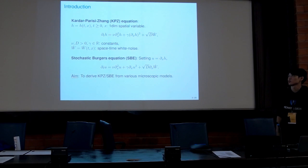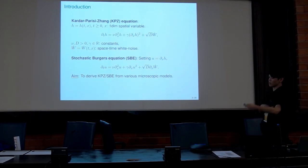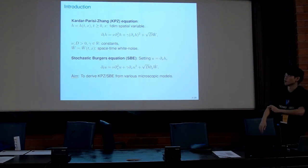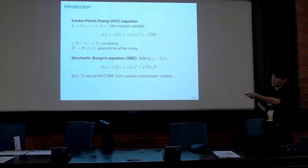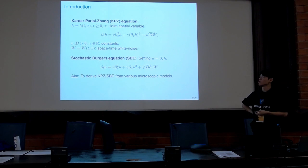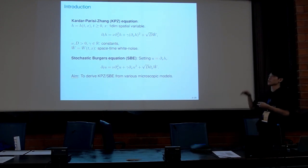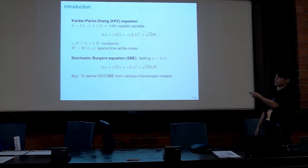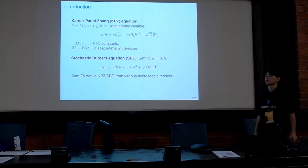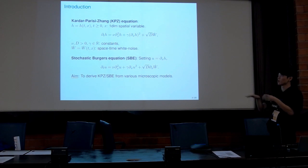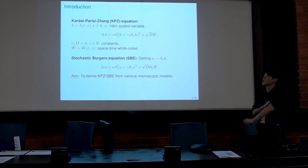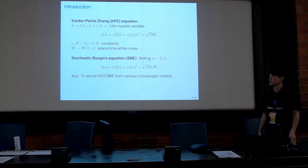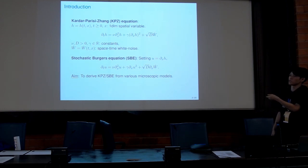The KPZ equation is the following stochastic partial differential equation, where the unknown function h satisfies this form of equation. Here nu and capital D are positive constants, gamma is a real constant, and the double dot denotes space-time white noise. We only consider a one-dimensional spatial setting. This is actually a kind of singular partial differential equation, and it has been very difficult to show the well-posedness of this stochastic differential equation, but nowadays this has been resolved and we can give a sense to this PDE.